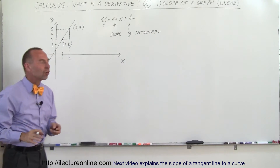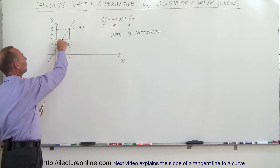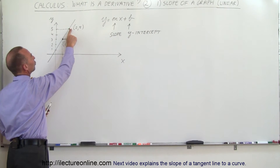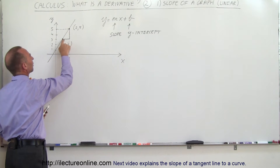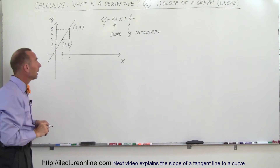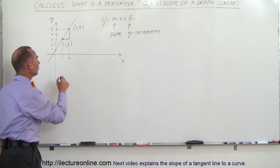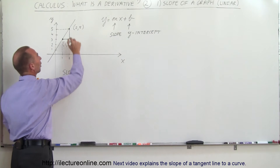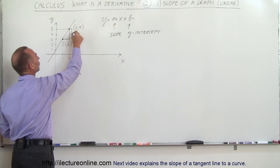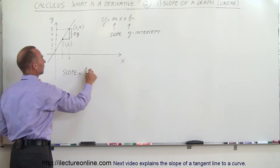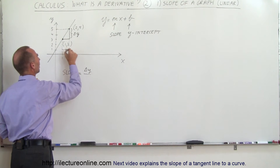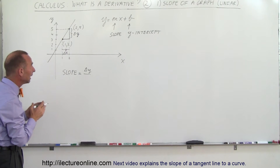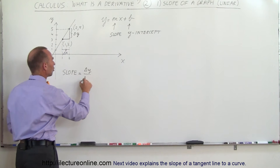Remember how we found the slope of a straight line — we pick two points on the line. This point here has x-coordinate 2 and y-coordinate 5; this point has x-coordinate 1 and y-coordinate 3. The slope can be defined as the ratio of the change in y divided by the change in x — delta y over delta x. The little triangle symbol simply means 'change in.'